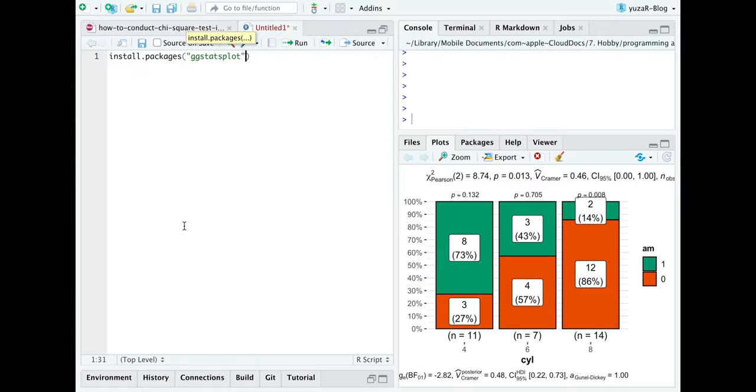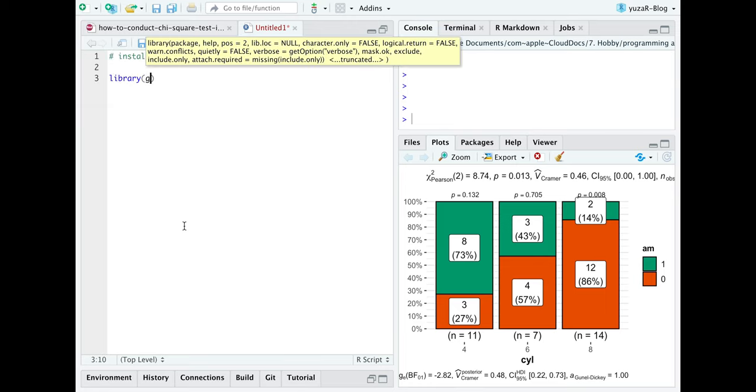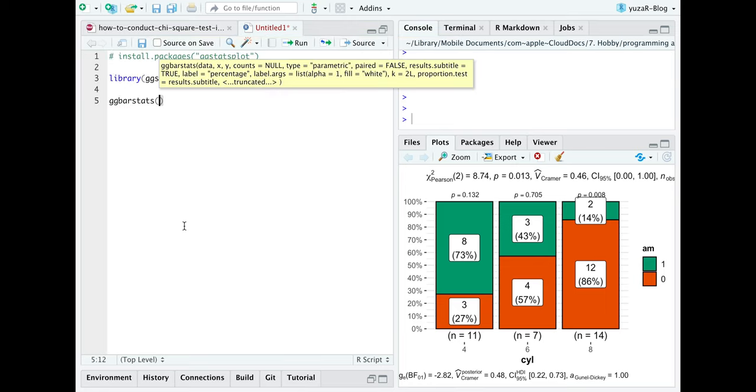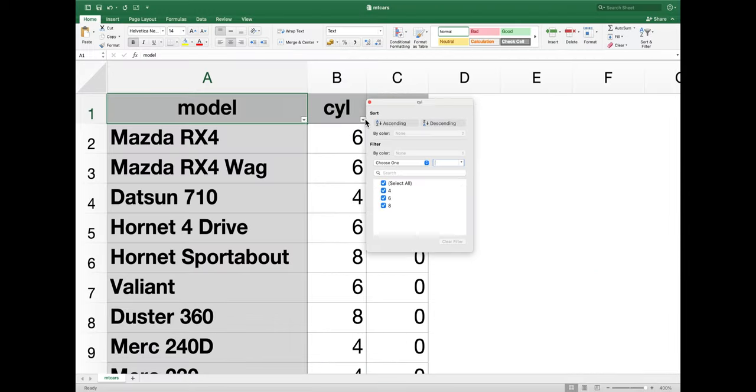If you have installed and loaded ggstatsplot package, you can use ggbarstats function to conduct and visualize chi-square tests of independence between two categorical variables, where variables can have two or more categories.